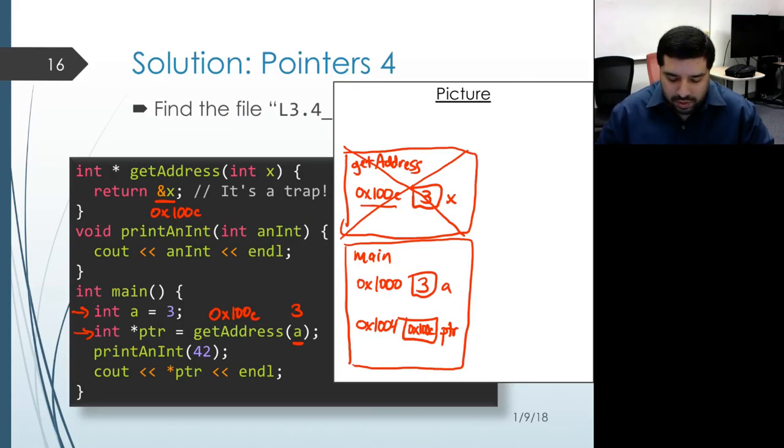We move on to the next line. And we have a call to the function printAnInt. And so, again, what happens is the first thing is that the argument gets evaluated. Here it's just a literal. So it just evaluates to the value 42.